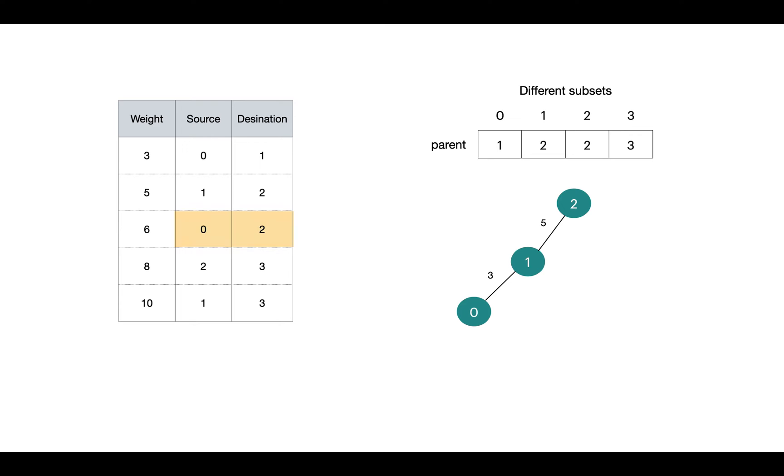Then comes 0-2. 0 is in the subset 1 and 1 is in subset 2, so 0 belongs to 2 and 1 belongs to 2 as well, so this edge won't get included.